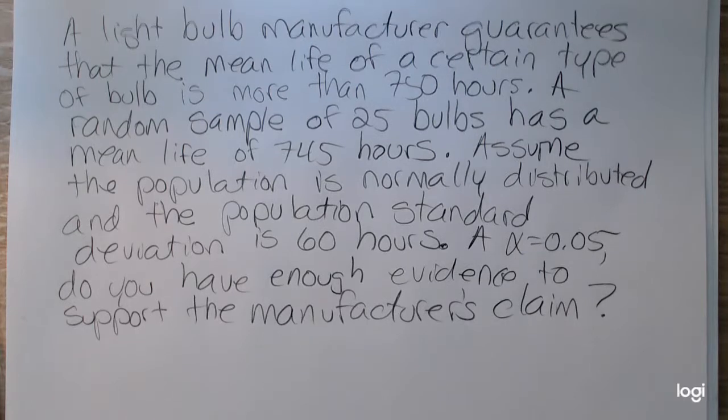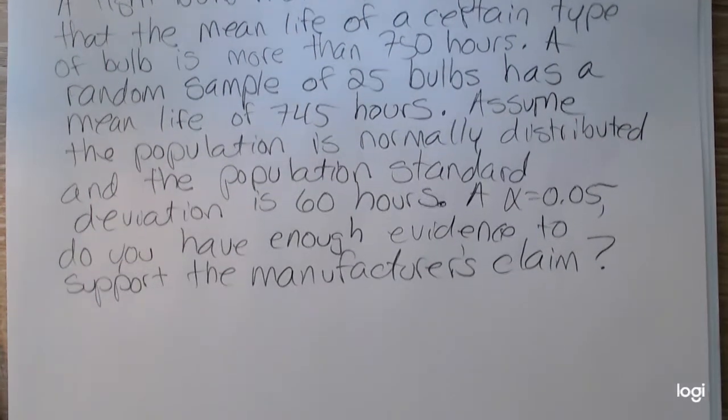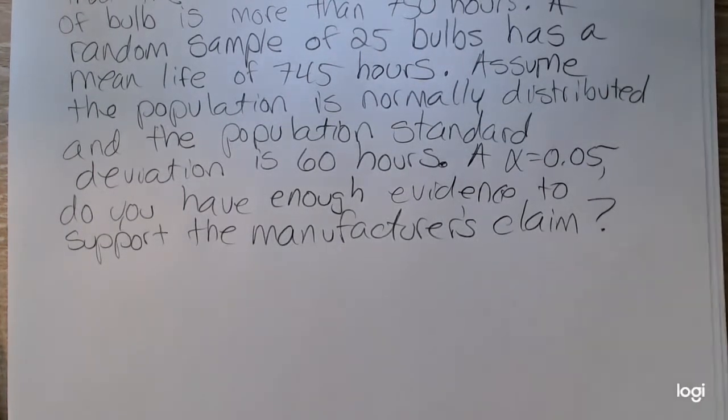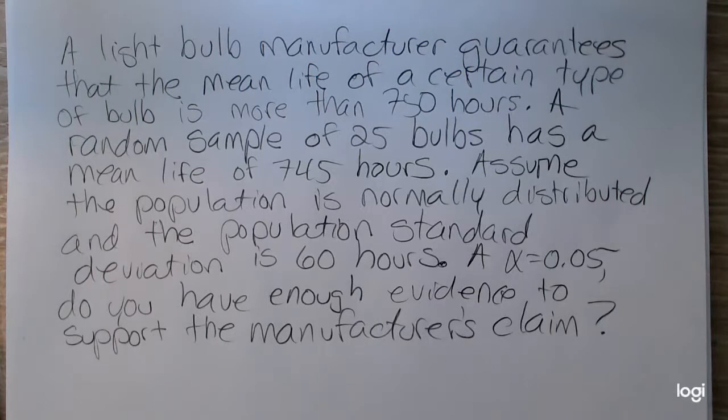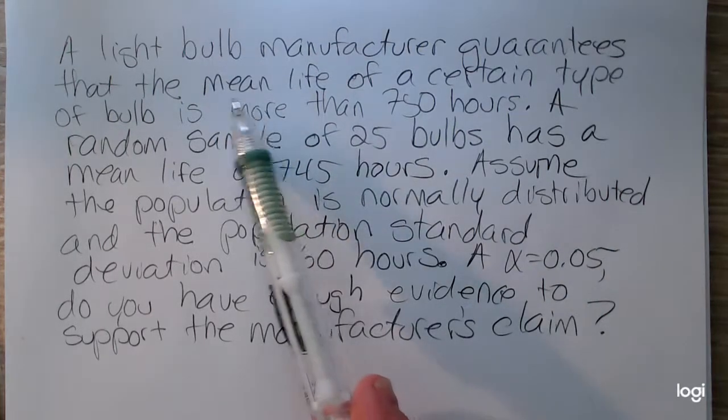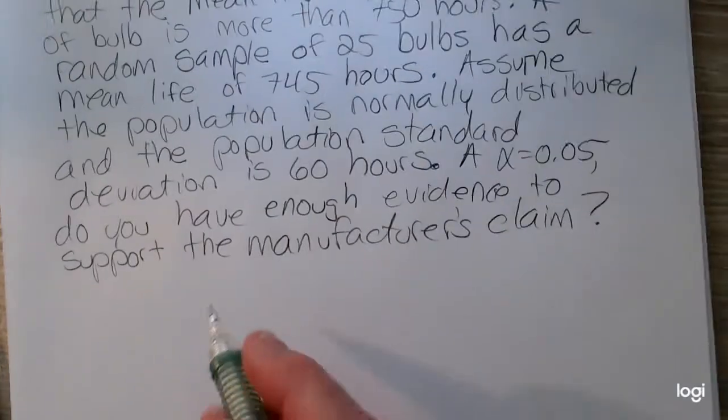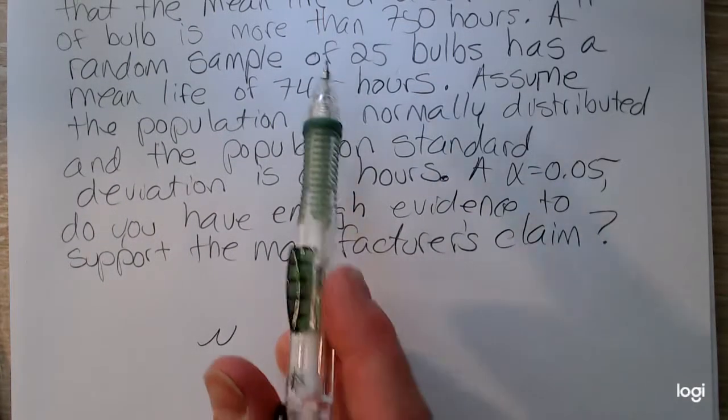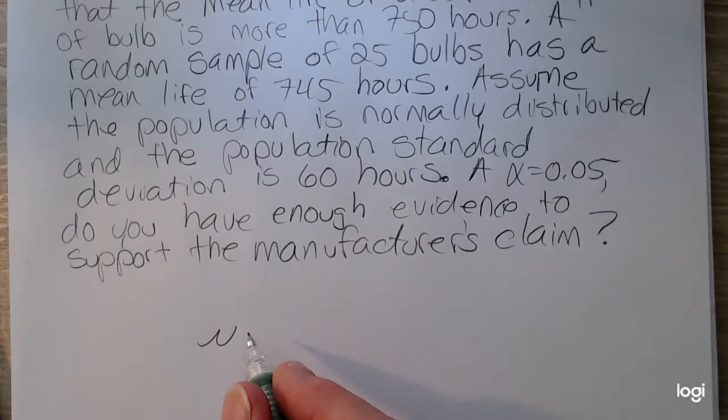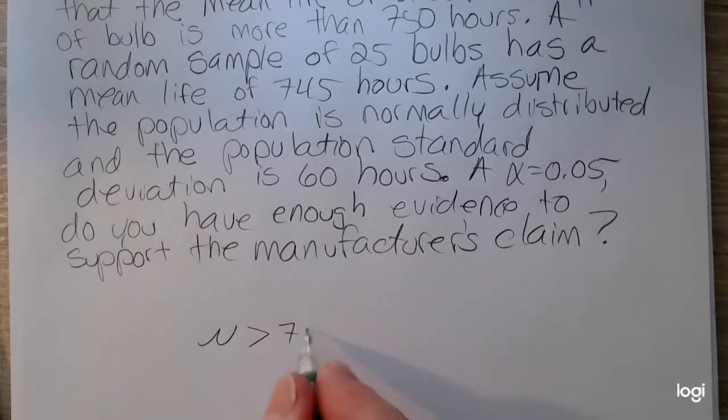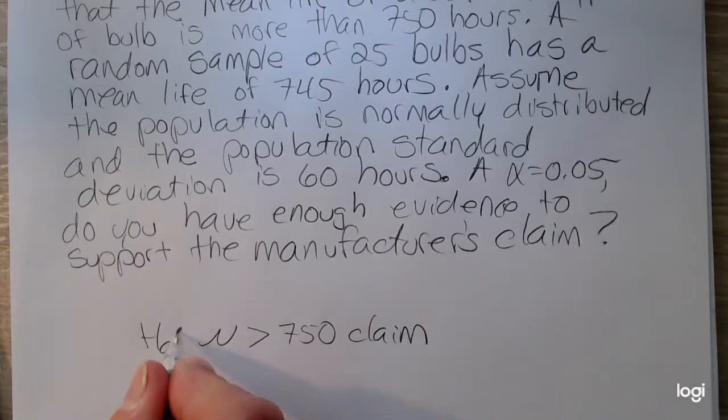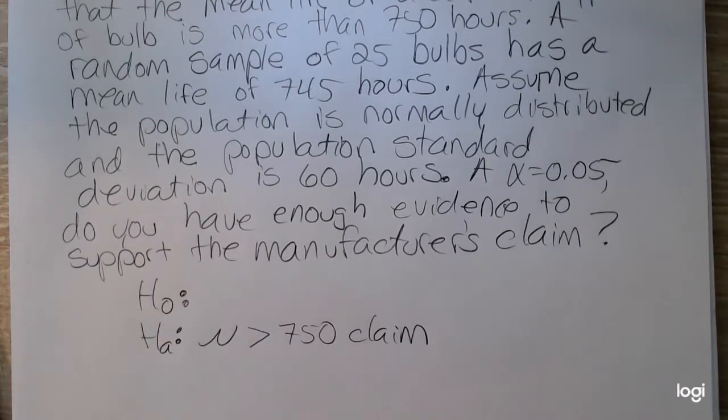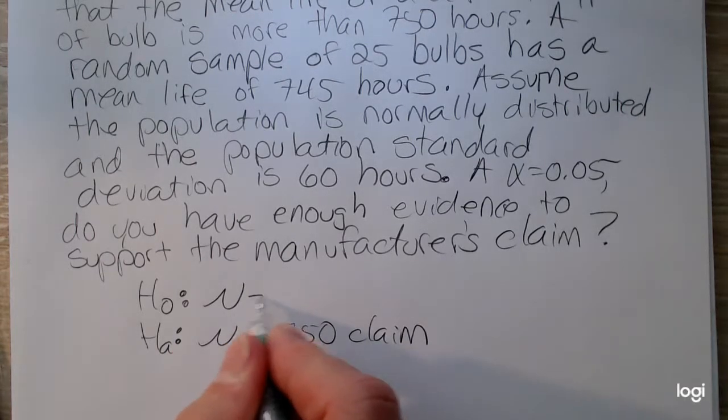I like to do this using the critical value method and the p-value method. The first step is to set up your null and your alternative. To do that, you need to identify the claim and rewrite it as a mathematical statement in terms of the parameter. Because this is a test about a mean, the parameter will be mu. I have mu more than 750 hours. That does not include the case of equality, that's a strict inequality. This is the claim. And because it does not have the case of equality, this is the alternative. So the null in this situation is mu is equal to 750.